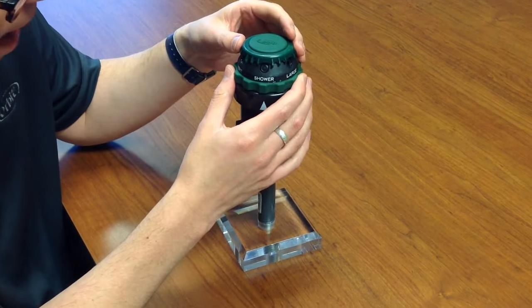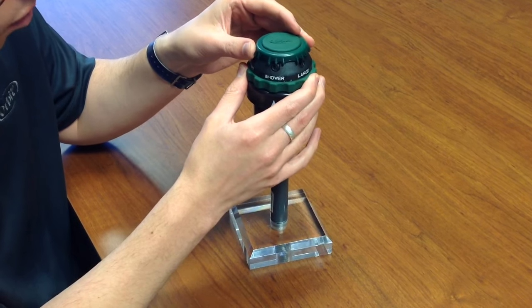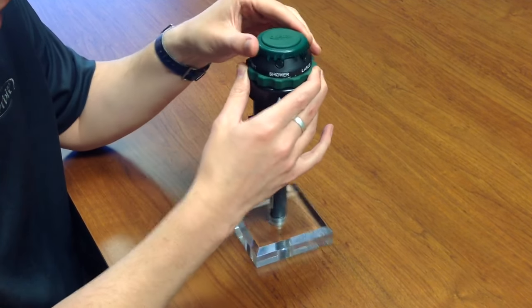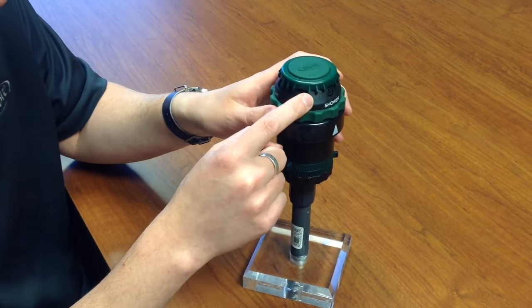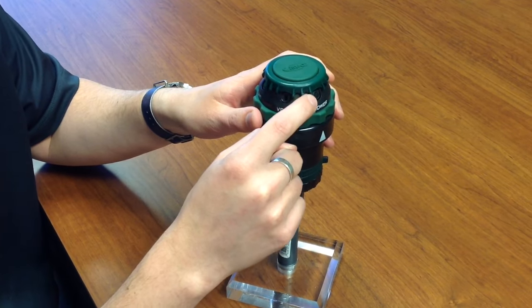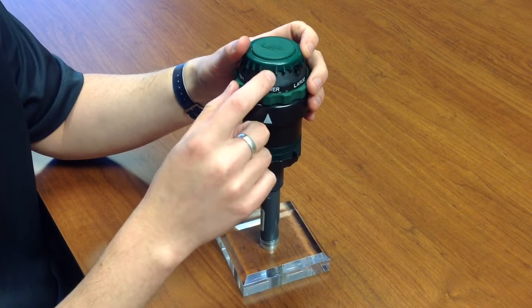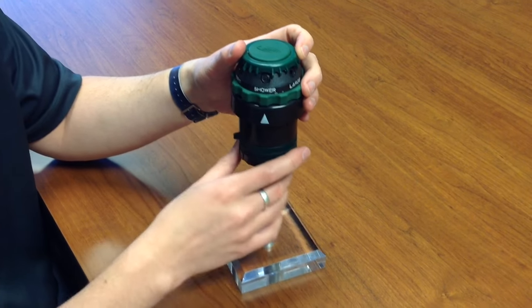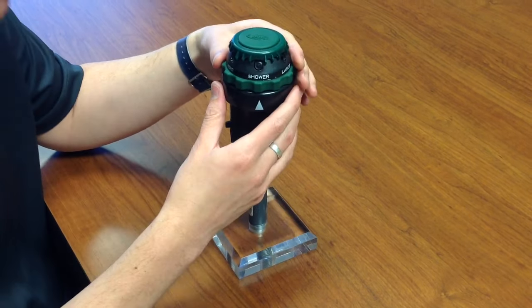And then here on the top we have the range adjustment ring. And you'll notice if you check out here there's three small tabs: one is long, there's a medium and a short one. And then there's also a section that you can select that doesn't have any tabs. These will diffuse the water.